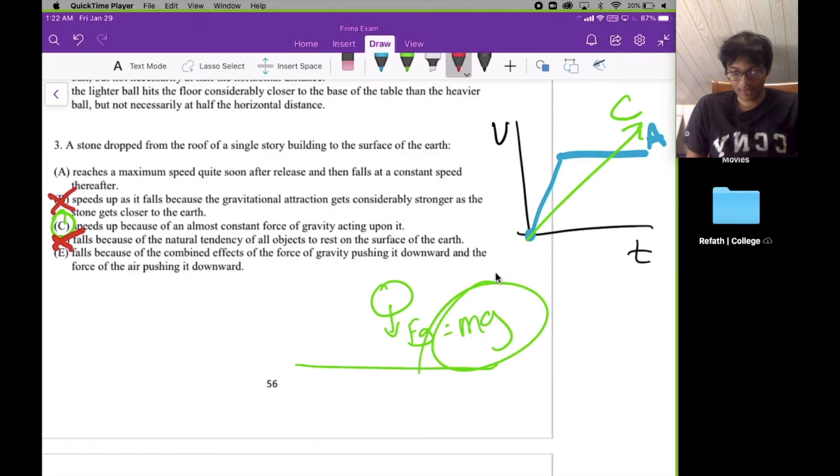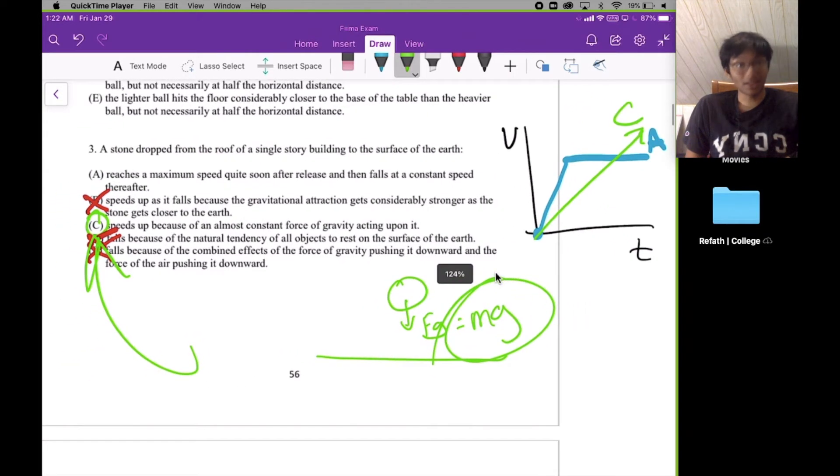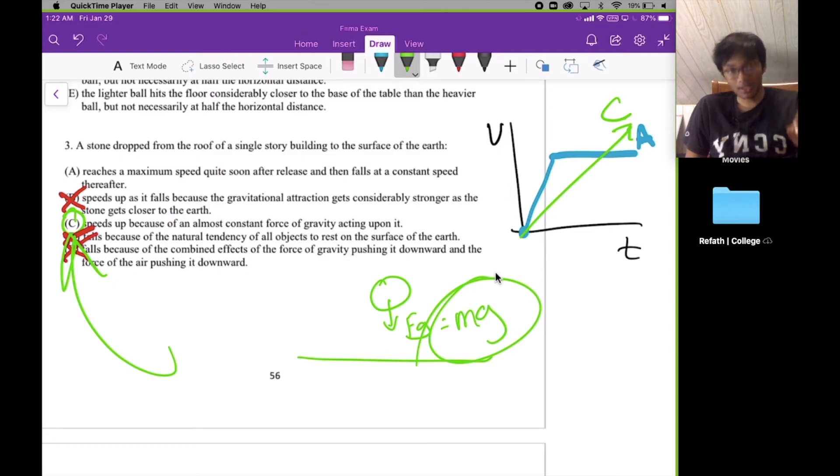Finally, the stone drops and falls because of the combined effects of force of gravity pushing it downward and the force of the air pushing it downward. There was no clue in the problem that the air currents were pushing the ball downward. That's a very contrived claim. So that means our answer is C. The force of gravity is constant, so the velocity is linear and the distance is parabolic, not exponential, because the integral of a linear function is a quadratic.